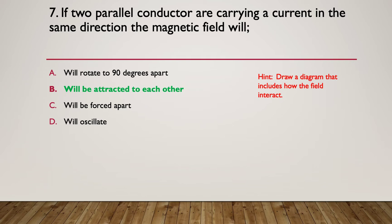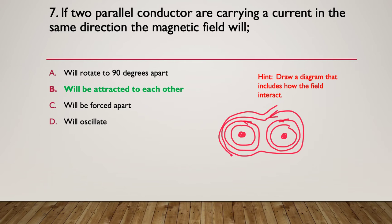They will be attracted to each other. We did a little diagram. We have a conductor with current traveling towards us and another one with current traveling towards us. We're going to get magnetic fields around these in the same directions. Those magnetic fields will all want to combine and they will all be in the same direction. That will have the effect of wanting to pull them towards each other.